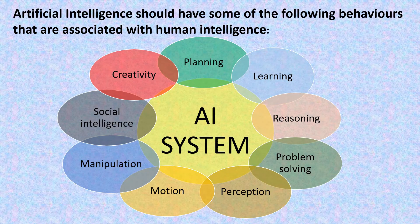Artificial intelligence should have some of the following behaviors that are associated with human intelligence. In an AI system there are some behaviors like planning, learning, reasoning, problem solving, perception, motion, manipulation, social intelligence and creativity. Let's discuss one by one.